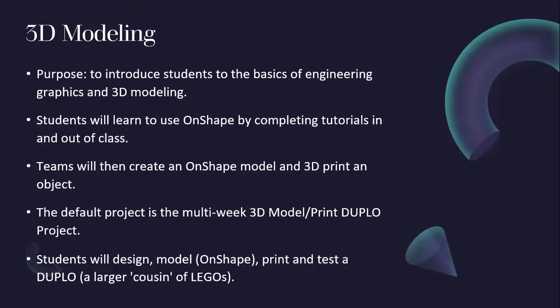The purpose is to introduce students to the basics of engineering graphics and 3D modeling. Students will learn to use Onshape by completing tutorials in and out of class. Teams will then create an Onshape model and 3D print an object. The default project is the multi-week 3D model print Duplo project — students will design, model, print, and test a Duplo, a larger cousin of Legos.